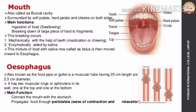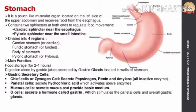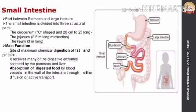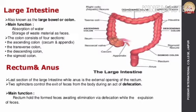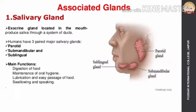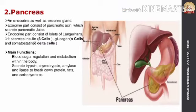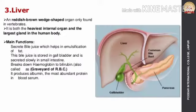The main functions of all organs associated with the digestive system: the mouth performs mastication, chewing, and saliva secretion; the esophagus performs peristalsis; the stomach performs digestion of proteins; the small intestine performs digestion of fats and proteins and absorption of digested food by blood vessels; the large intestine absorbs water and stores waste material as feces; the rectum and anus perform egestion of undigested food. Associated glands: the salivary gland helps in digestion, swallowing, and speaking; the pancreas secretes enzymes for digestion of proteins, fats, and carbohydrates; the liver secretes bile juice which mainly helps in the emulsification of fat.